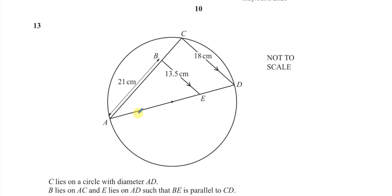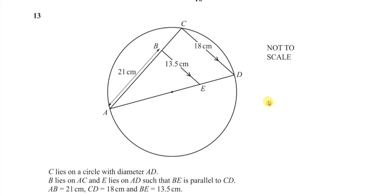B lies on AC and E lies on AD such that BE is parallel to CD, so we have a pair of parallel lines here as well. AB equals 21 cm and CD equals 18 cm and BE equals 13.5 cm, so all those bits of information are marked on the diagram. It says work out the radius of the circle.